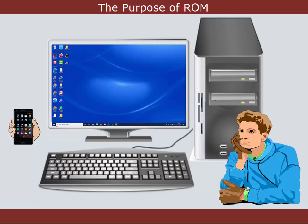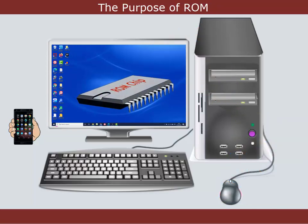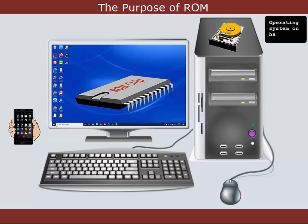But there is a problem here. If the operating system is needed to run software, what is it that manages the loading of the operating system in the first place? Well, this is where the ROM comes in. Your device has to have information about its configuration stored ready to be applied when it is switched on. It also has to have a set of basic instructions that will read the operating system files from the default device and execute them.